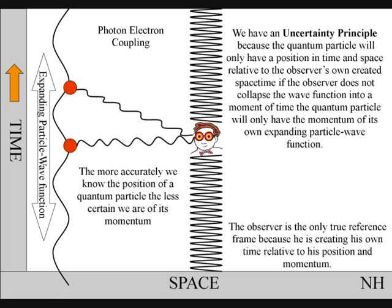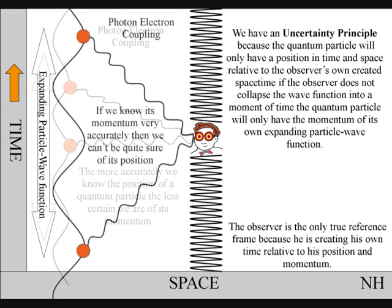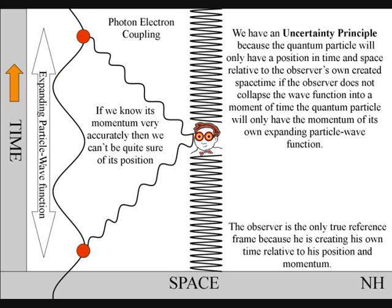Therefore, the more accurately we know the position of a quantum particle, the less certain we are of its momentum. And if we know its momentum very accurately, then we can't be quite sure of where it is.